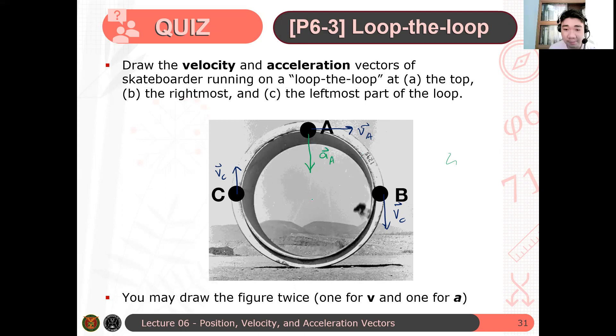So if I draw some vector normal to this, ano yung magiging dapat direction ng velocity vector? Towards pa ganyan ba? Nakita yung pointer ko. Pa ganyan ba o pa ganyan? Diagonal downward or diagonal upward?